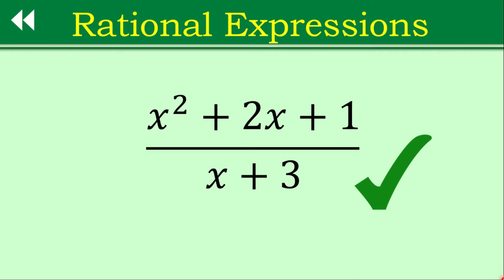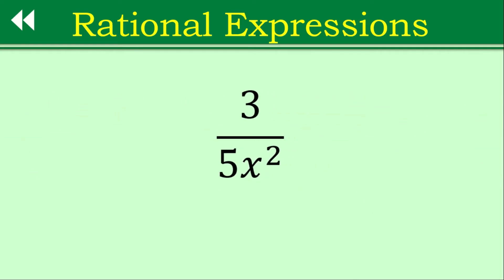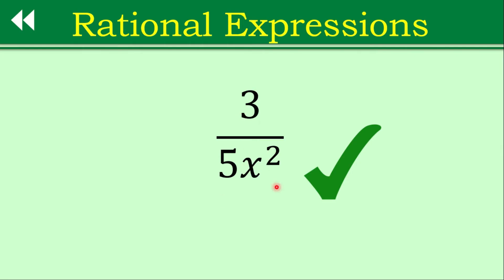Let's proceed to another example. Is this a rational expression? The answer is also yes — this is another example of a rational expression. There's a variable in the denominator, so the second criteria is checked. It shows the ratio of two polynomials. The numerator, though it's a constant, is considered a monomial, and the denominator as well is a monomial. So we have monomial over monomial, considered as a rational expression.